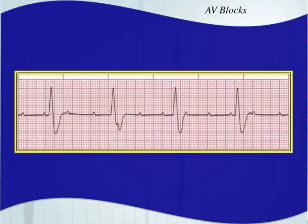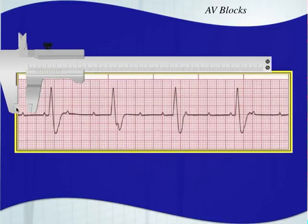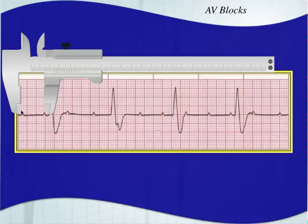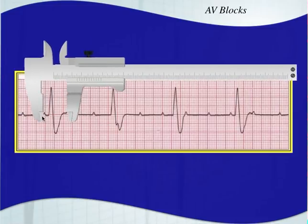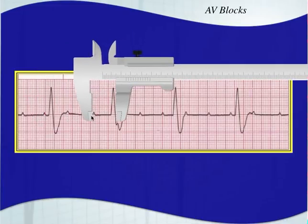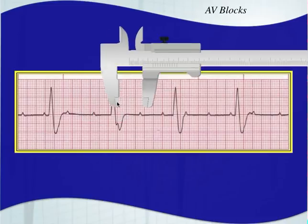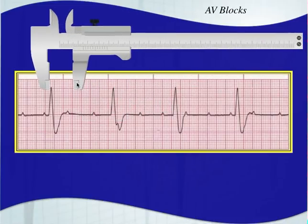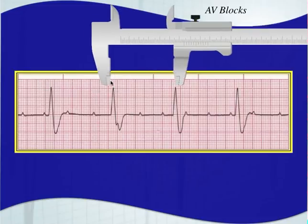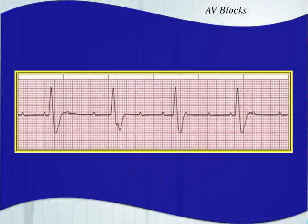Next strip: is the PR interval a constant length? You can clearly see this one is way longer than this — it's not constant. Do we have a P wave for every QRS? These are not associated. The P-to-P intervals are just marching out, with a hidden P wave visible at the bottom of the S wave. Your QRS complexes stay regular — R-to-R interval stays regular. So this is a third degree AV block — complete AV dissociation. P-to-P will be the same, R-to-R will be the same, but they are not associated with each other.